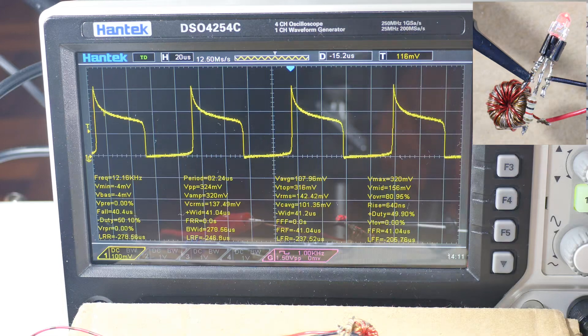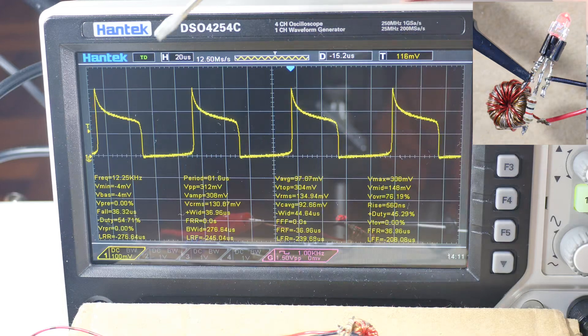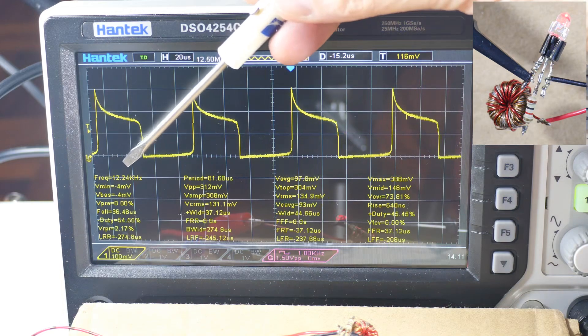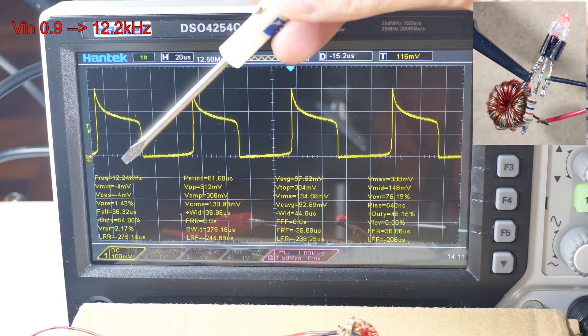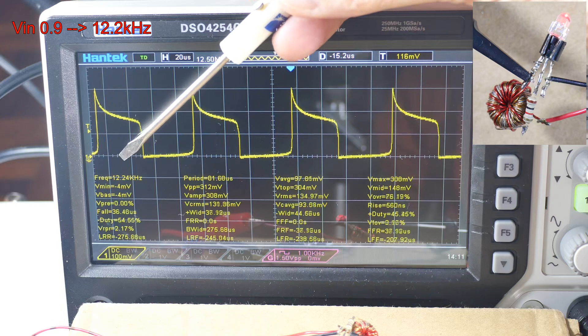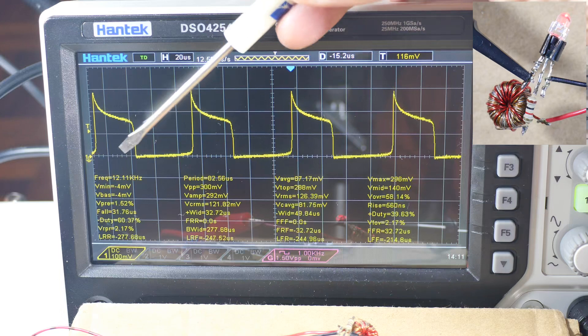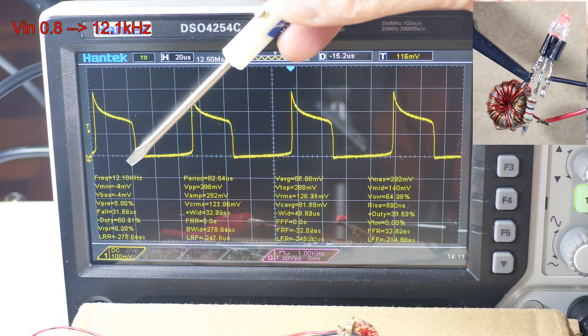Let's drop it to 0.9. There's 0.9 and the frequency stays at 12.2, call it. Drop a little more. Let's see, 0.8, 12.1.